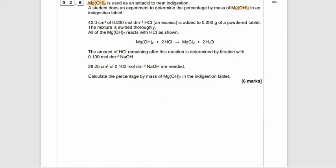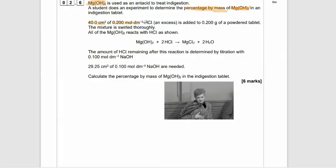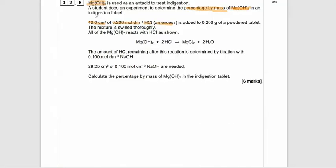It's six marks. So magnesium hydroxide is used as an antacid to treat indigestion. A student does an experiment to determine the percentage by mass of magnesium hydroxide in an indigestion tablet. We've got 40 cm³, that's the volume, and we've got 0.2 mol/dm³ hydrochloric acid in excess. Now, once you're given volume and concentration, you should think of n = C × V, which is how to calculate the moles.